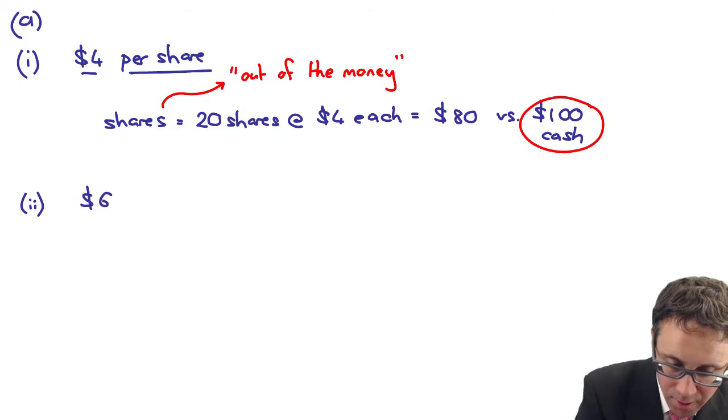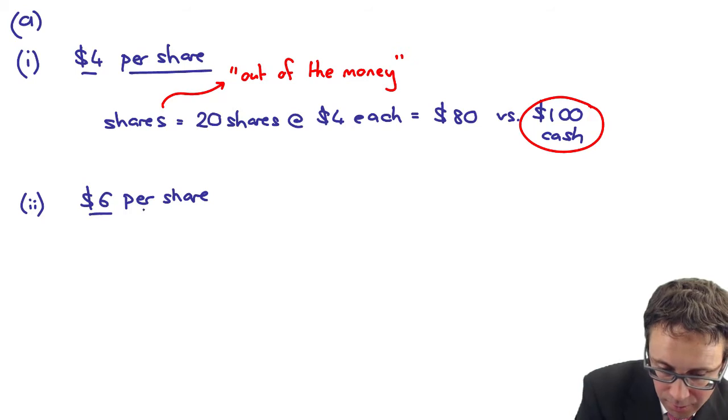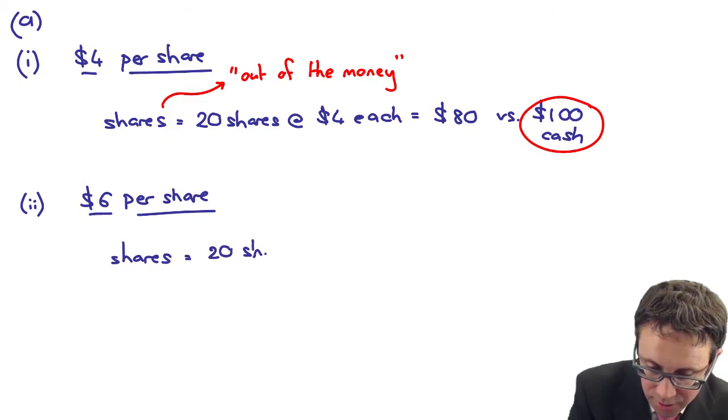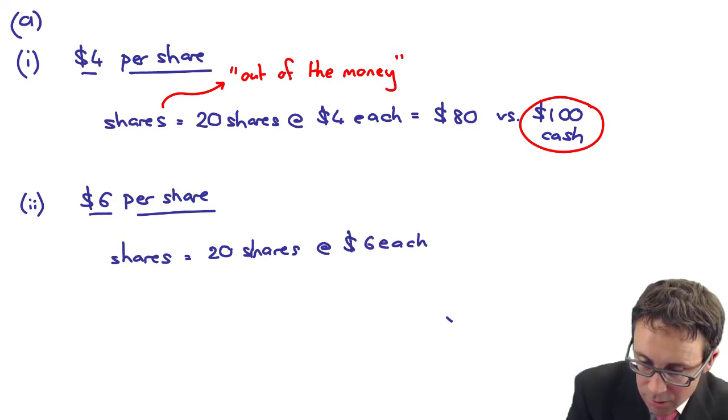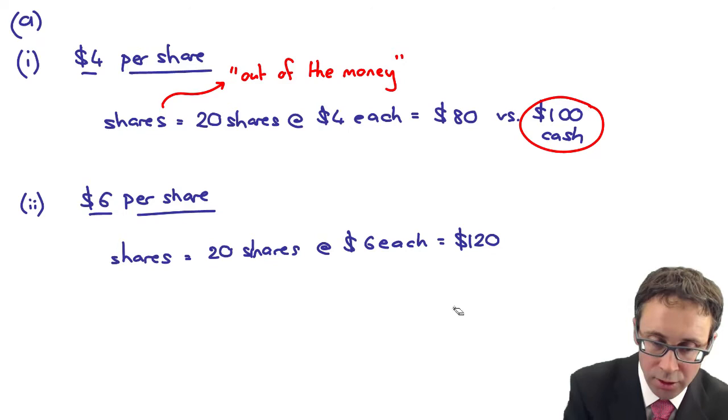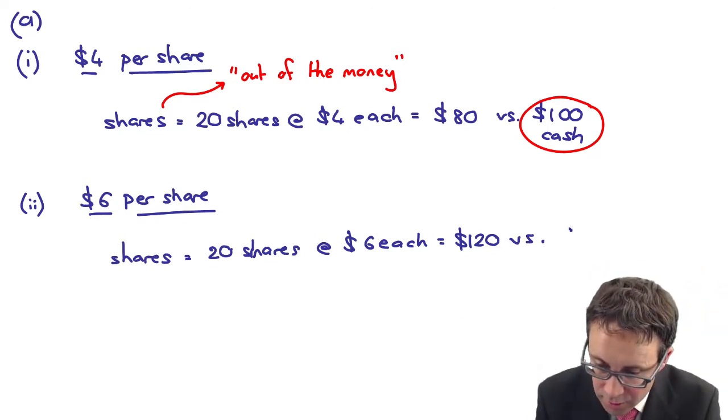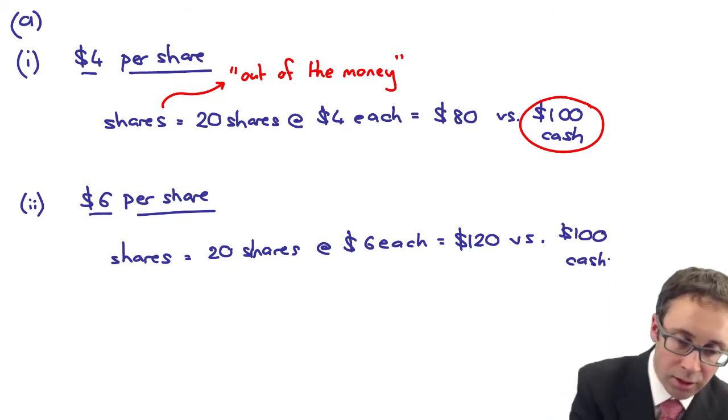Scenario two is where it is $6 per share. I think you can guess what's going to happen. So the value of the shares, 20 shares, they are now at $6 each, which is $120 versus again the same option of $100 cash.